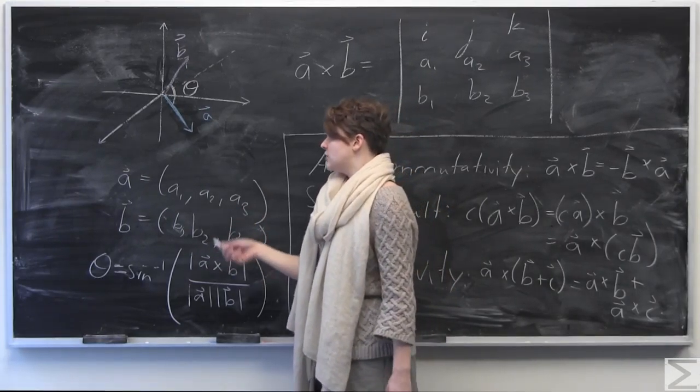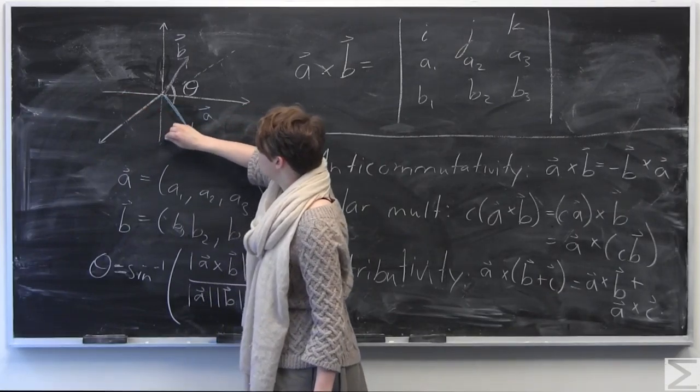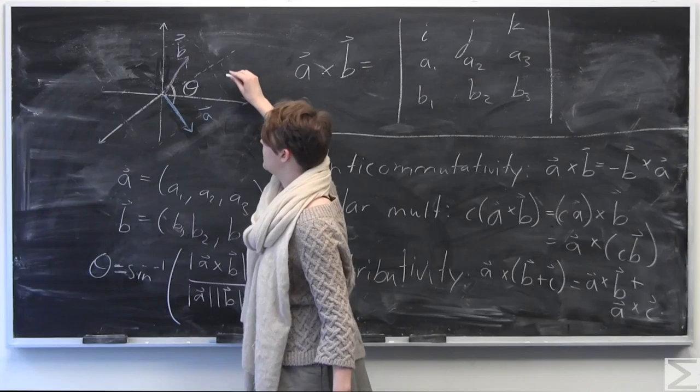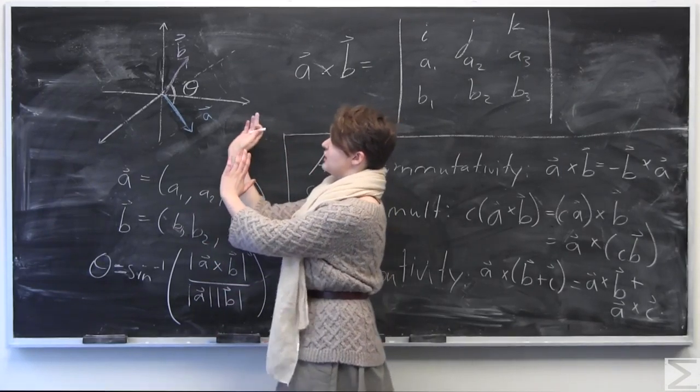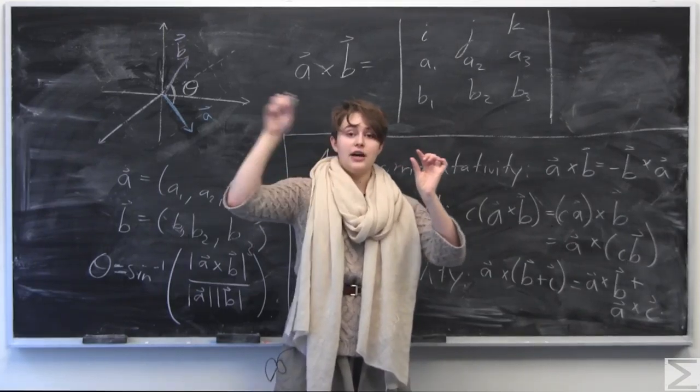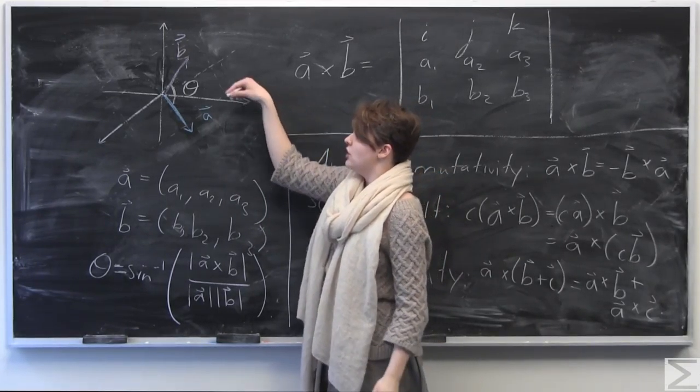We know that we can use the dot product, for example, to find the angle between A and B, which is much easier than using a cross product. But we can also use a cross product to find the angle between A and B. So you can think here that A and B are kind of on some plane.